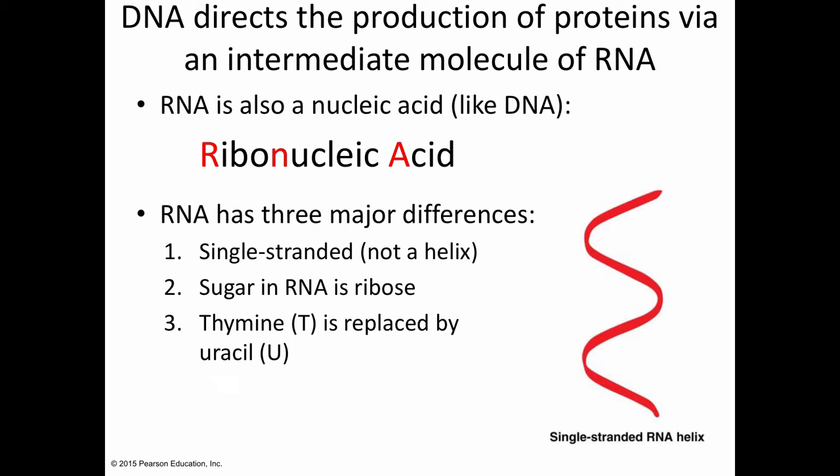DNA is responsible for directing the production of proteins by our cells, and proteins are made at organelles called ribosomes. DNA directs protein production through an intermediate molecule called RNA — ribonucleic acid — the other type of nucleic acid. RNA is very similar to DNA but has a few major differences: RNA is single-stranded where DNA is double-stranded, and the sugar in RNA is ribose rather than deoxyribose.